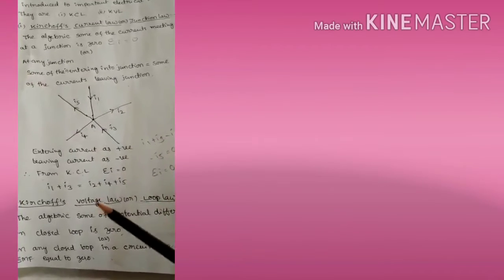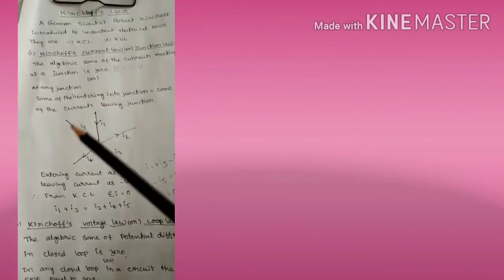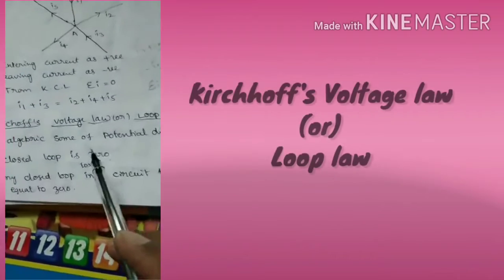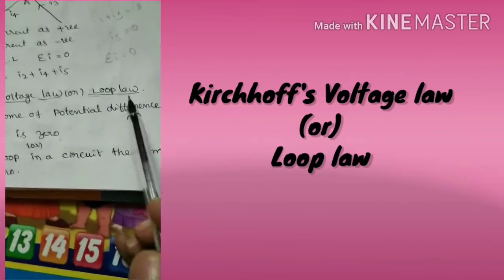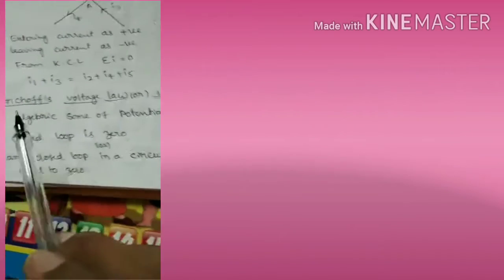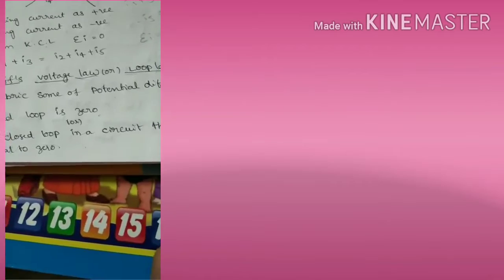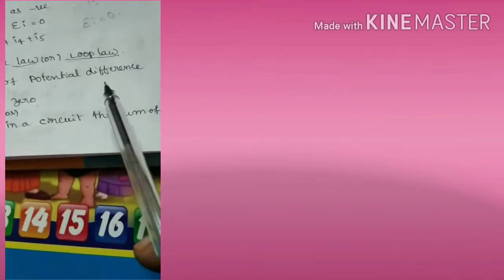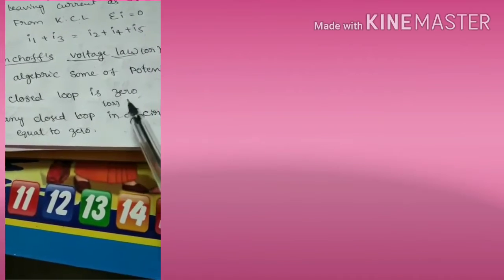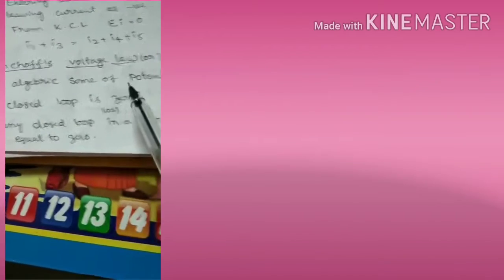Applying KCL: i1 + i3 = i2 + i4 + i5. This is Kirchhoff's Current Law. Now we move on to Kirchhoff's Voltage Law, also called the Loop Law.